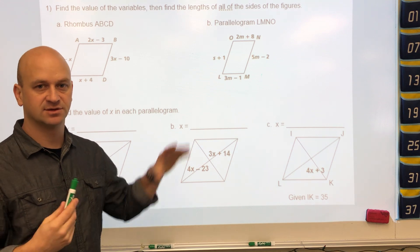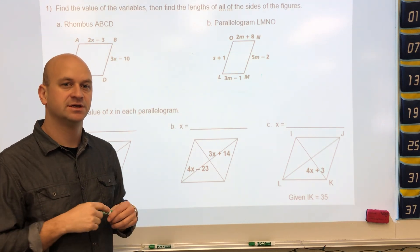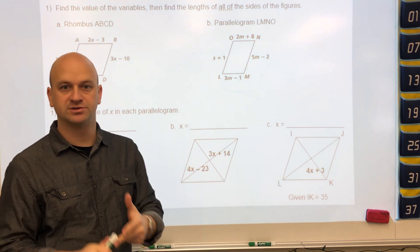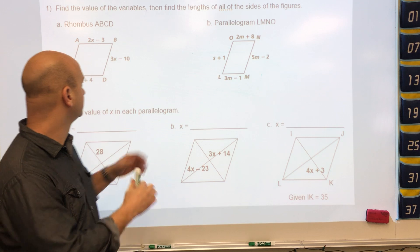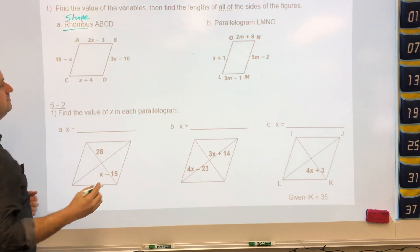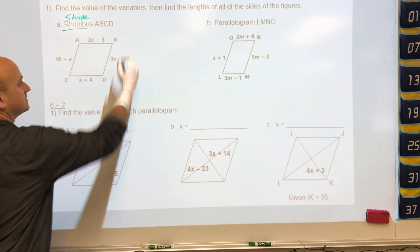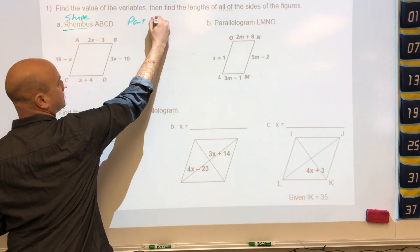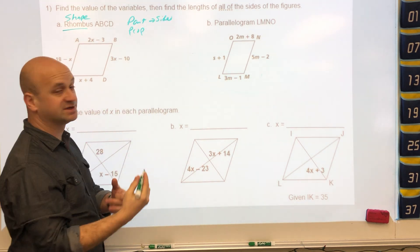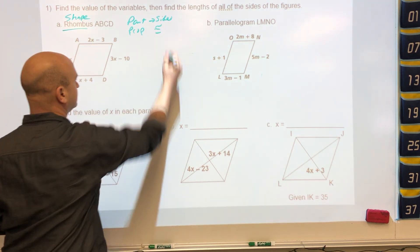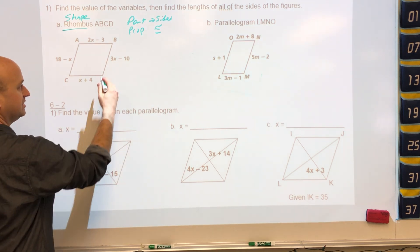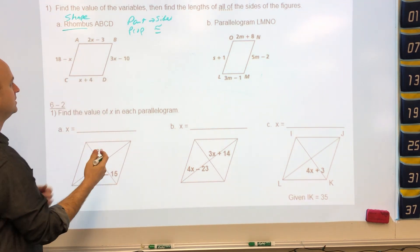In preparation for your test, let's go through some problems on the review guide. Keep in mind the SPP we've talked about in class: the shape, the part you're dealing with, and the property related to that part. In this problem, the shape is the rhombus, the part is sides, and the property of sides of a rhombus is that they're congruent. So all of these sides are congruent to each other.